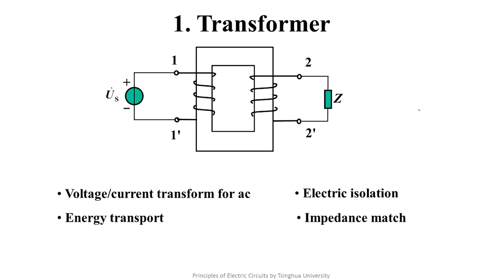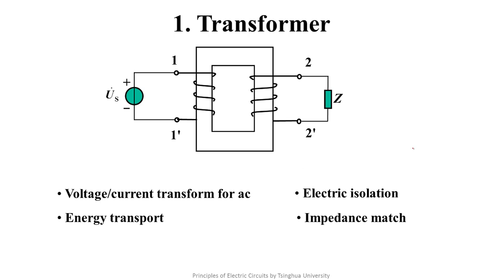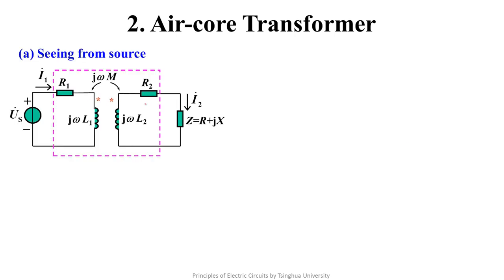We may have the impression that the transformer is only used to change voltage, but through this and the following lectures we will introduce its other applications. In the following lectures, we assume that there is only air in the magnetic path of the transformer coil, so it is called an air core transformer. Although we discuss the air core transformer, if the relationship between magnetic intensity and magnetic flux density of the magnetic medium is linear, all conclusions based on the air core transformer are also applicable for the magnetic core transformer.